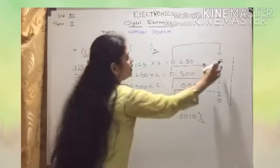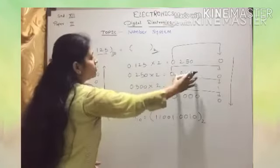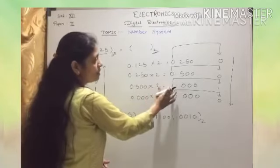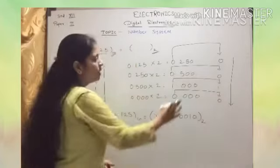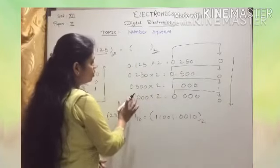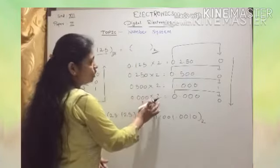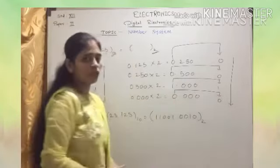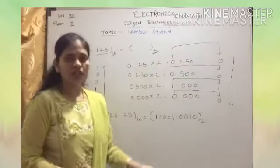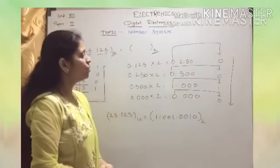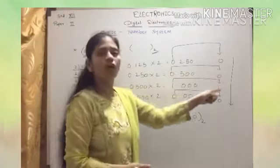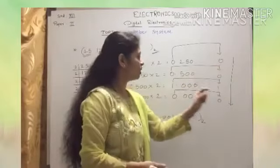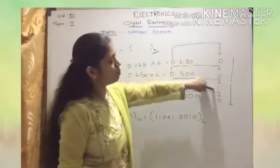Again we write the integer part, which is 0. Then the fractional part 0.500 multiplied by 2 gives 1.000 — the integer part is 1. Then 0.000 multiplied by 2 gives 0.000, and we take that integer part. We continue this process for 3 or 4 steps. For the fractional part, we write the answer from top to bottom. So the fractional binary result is 0010.